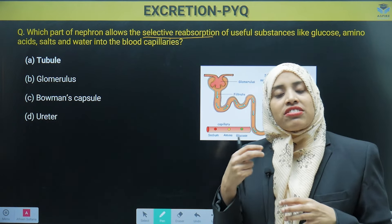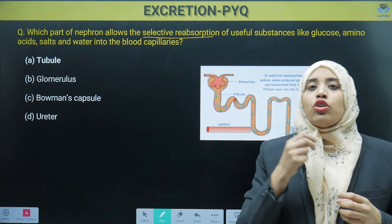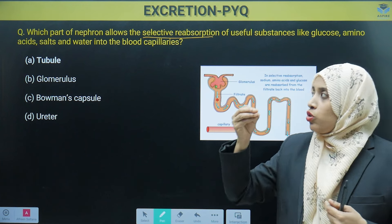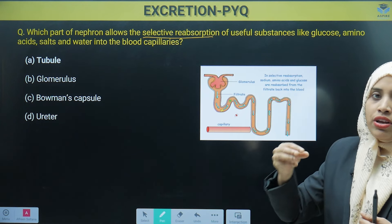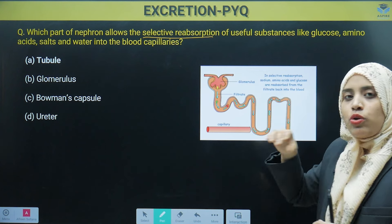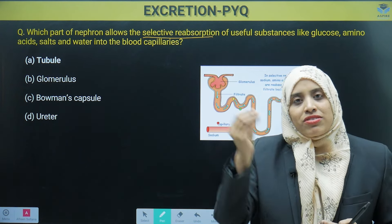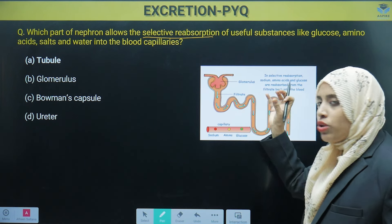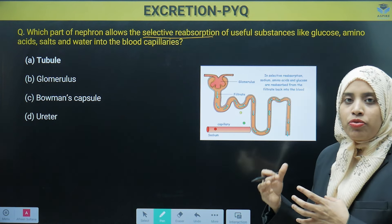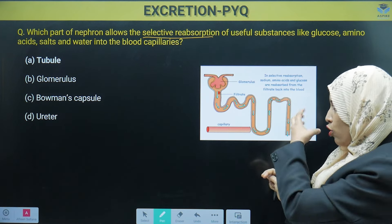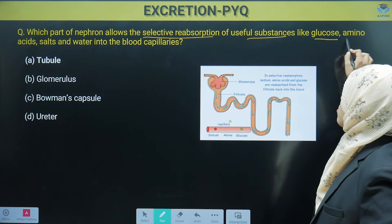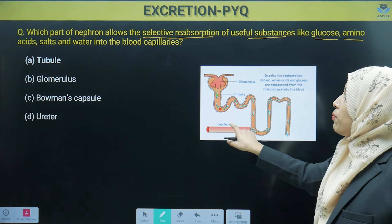What does our kidney first do? Filtration takes place in the glomerulus, and in that filtrate there is sugar — glucose — salt, water, and all these things. As a filtrate, these are first released into the tubules. But different parts of the tubules reabsorb the useful substances — those useful things are reabsorbed back. The capillaries take them back so they can be used again. So we can say selective reabsorption of useful substances like glucose, amino acids, salt, and water occurs back into the blood capillaries.